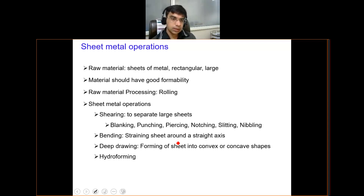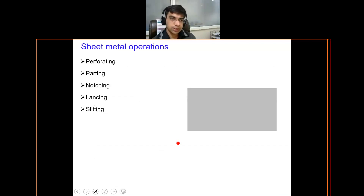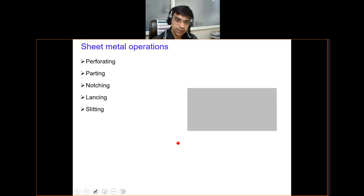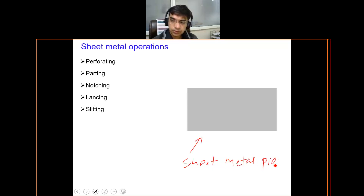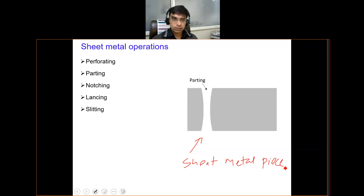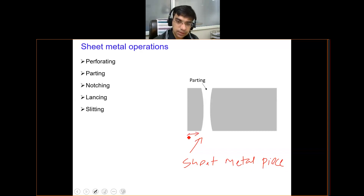Another set of operations includes perforating, parting, notching, lancing, and slitting. Consider a schematic of a sheet metal piece. Looking at parting first — parting, as the name tells, is an operation to cut the sheet metal into two parts, so you get two separate pieces — the sheet metal has been parted.